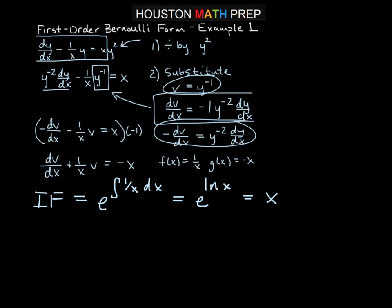So we then take the equation, and we multiply through the entire equation by our integrating factor x. So that will give us x times dv dx plus x times 1 over x will reduce to 1, just giving us v there, equals negative x squared.